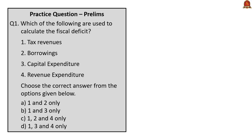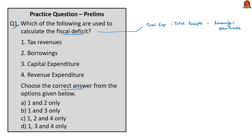Let us move on to the practice question discussion session. Question one: which of the following are used to calculate fiscal deficit? The options include tax revenues, borrowings, capital expenditure, and revenue expenditure. We saw that fiscal deficit is total expenditure minus total receipts except debt capital receipts. Debt capital receipts consist of borrowings and other liabilities, which are not taken into account while calculating fiscal deficit. Total expenditure refers to both capital and revenue expenditure. Eliminating borrowings (item B), the correct answer is option D — 1, 3 and 4 only.